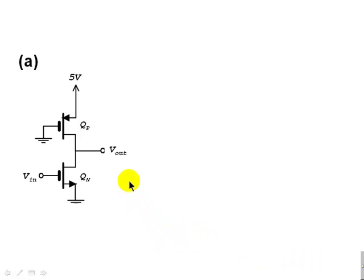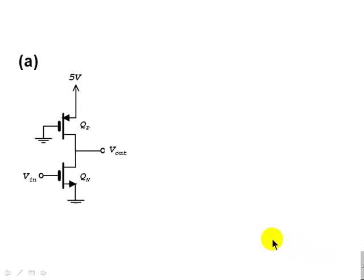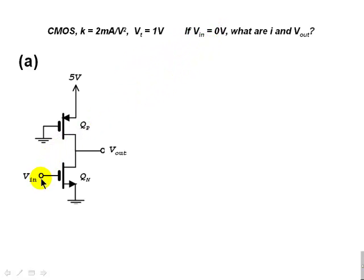For question 6 of the final exam, we are given a CMOS pair. K is given, VT is given, and 5 volts are applied to the supply. The input is different for each of the three parts of the question. We are asked: if we apply 0 volts to the input at the gate of the N transistor, what is the output voltage, what is the current flowing through, and what is the state of each of the two transistors?